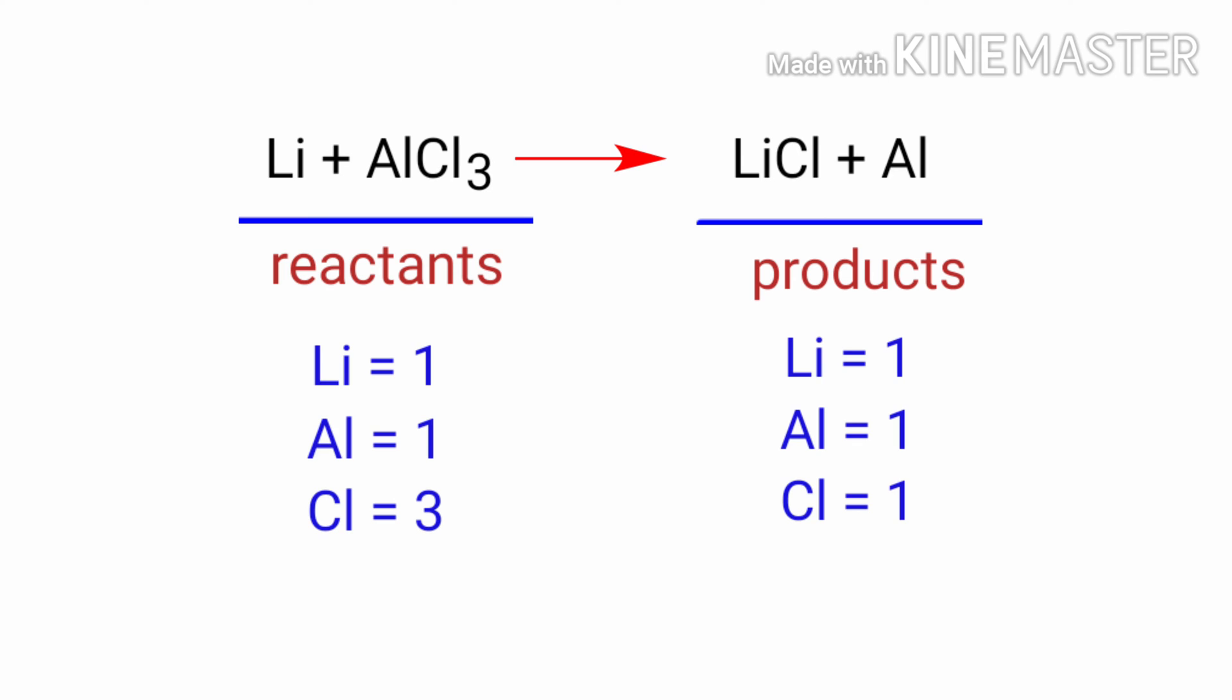In the reactants side, there are one lithium atom, one aluminum atom, and three chlorine atoms. On the products side, there are one lithium atom, one aluminum atom, and one chlorine atom.